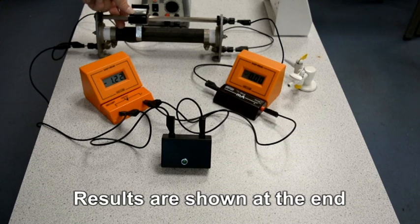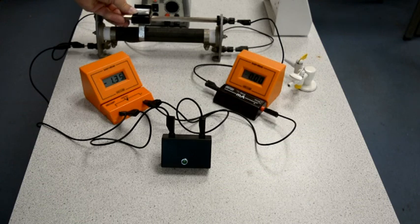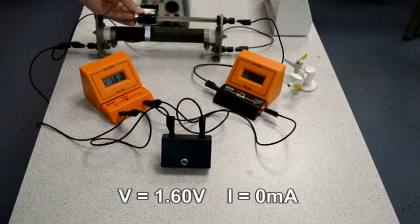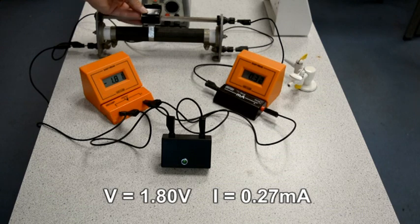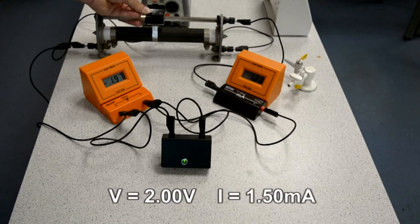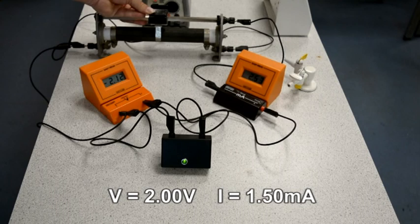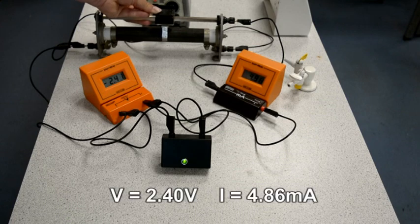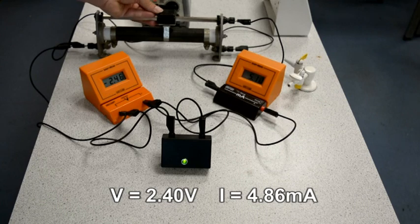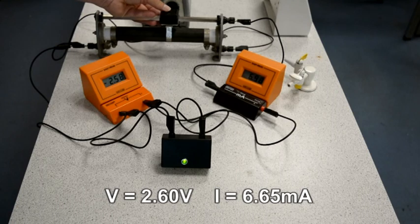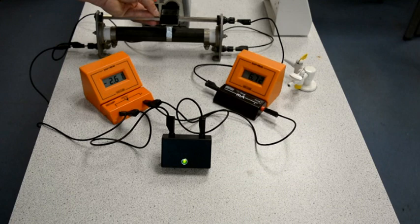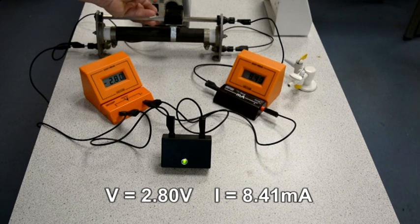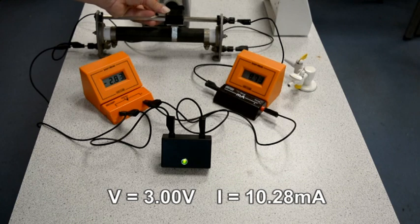They're difficult to see, but for 1.40 volts there is no current. For 1.60 volts, there is no current. For 1.80 volts, the current is 0.27 milliamps. For 2.0 volts, it is 1.5 milliamps. For 2.2 volts, it is 3.14 milliamps. For 2.4 volts, it is 4.86 milliamps. For 2.6 volts, it's 6.65 milliamps. For 2.8 volts, it's 8.41 milliamps. And finally, for 3.0 volts, it's 10.28 milliamps.